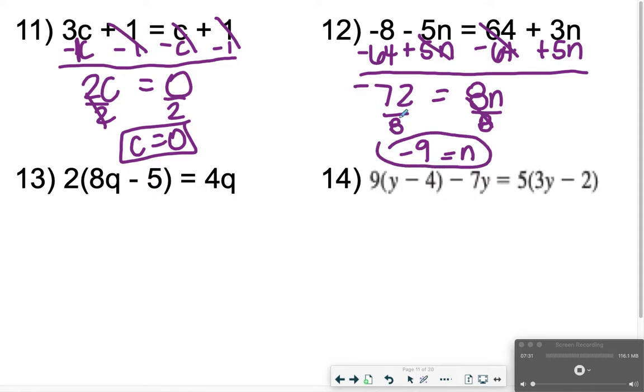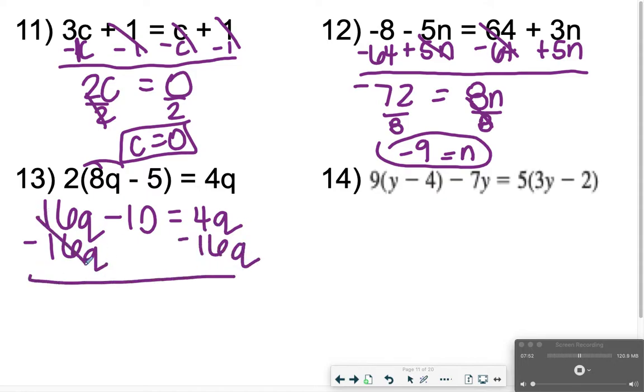Flip my paper over here and keep going. 13. Distributing the 2 first. So 2 times 8q is 16q, 2 times minus 5 is minus 10, and that's all equal to 4q. Since I already have 4q by itself, I'm going to scooch my 16 over with the 4q, so I'm going to subtract 16q from both sides. 16s cancel out. I get negative 10 is equal to negative 12q, and then I'm going to divide by negative 12. I just like to look at it and say 10 over 12 is a fraction and can be simplified to a positive 5 sixths.